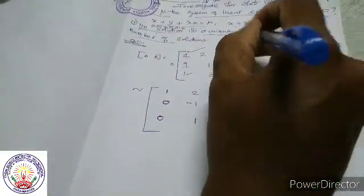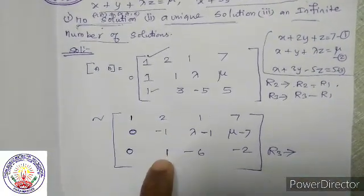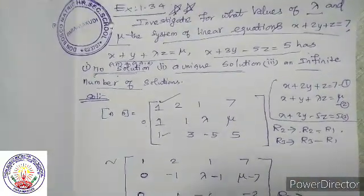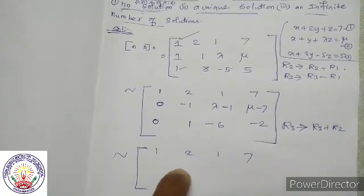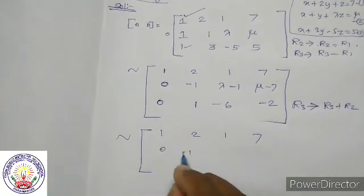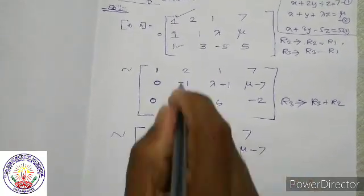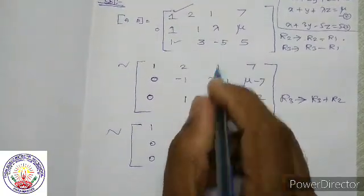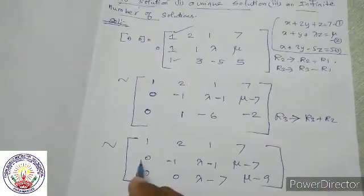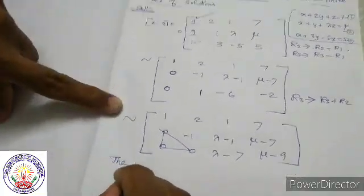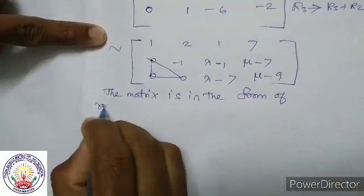Next, the second value of row 3 is 0, so R3 gives R3 plus R2. After R3 plus R2: row 1 is 1, 2, 1, 7 — unchanged. Row 2 is 0, minus 1, lambda minus 1, mu minus 7. Row 3: 0 plus 0 is 0; minus 1 plus 1 is 0; lambda minus 1 minus 6 is lambda minus 7; mu minus 7 minus 2 is mu minus 9. The matrix is now in row echelon form.